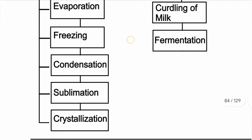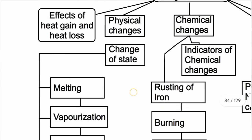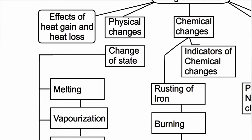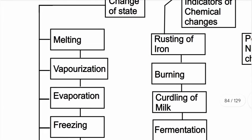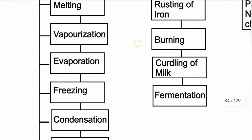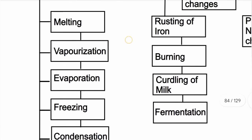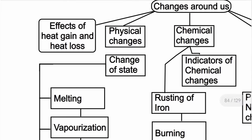So, looking at the effects of heat gain and heat loss: these are physical changes — that is the change of state. The changes of state are: melting, vaporization, evaporation, freezing, condensation, sublimation, and crystallization. Change of state involves solid to liquid to gas.